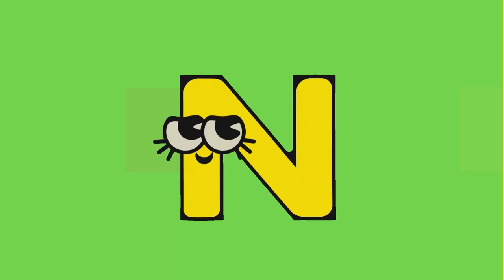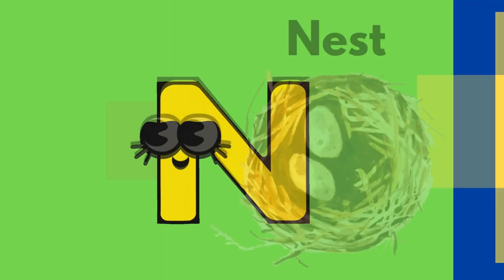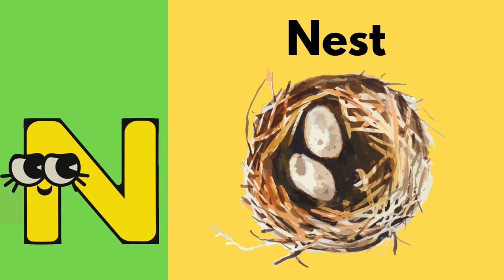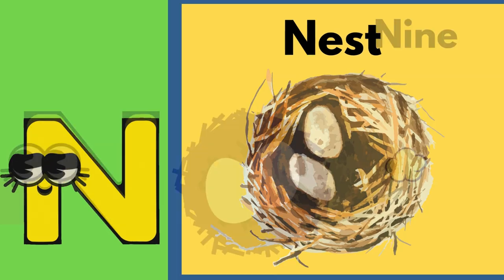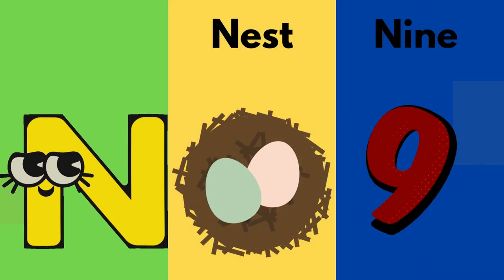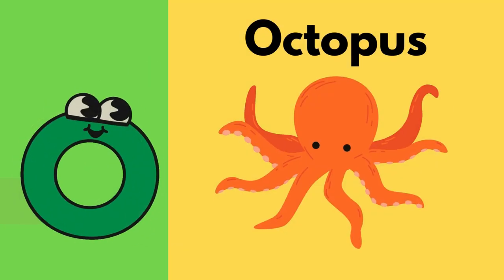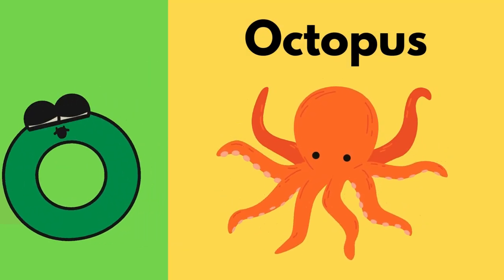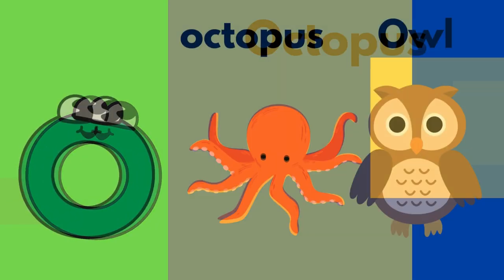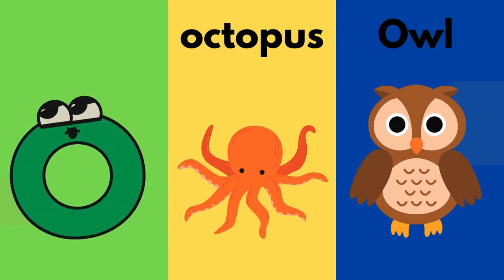N is for nest, nest. N-n-n-n. O is for octopus. O-O octopus. O-O, O-O.